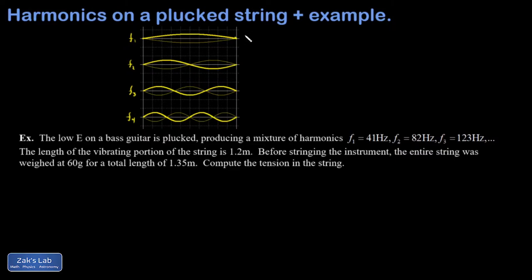So in the first picture, I have half of a wavelength equals the length of the string. In the second one, a whole wavelength equals the length of the string. In the third one, 1 1⁄2 wavelengths equals the length of the string. And in the final one, 2 wavelengths equals the length of the string.